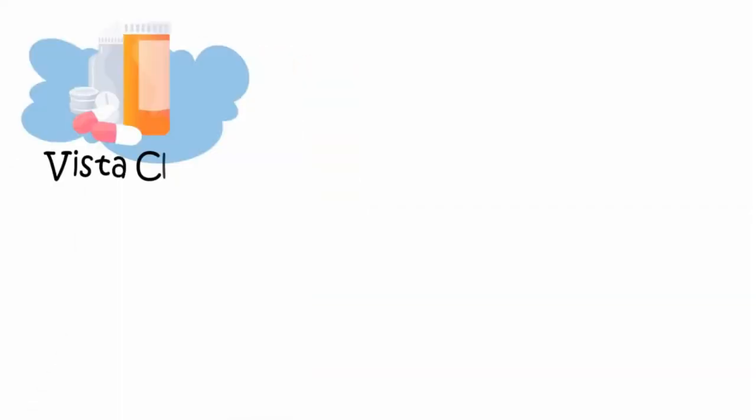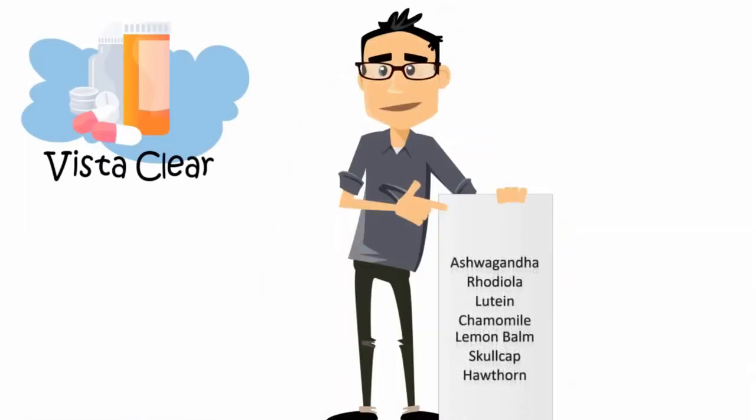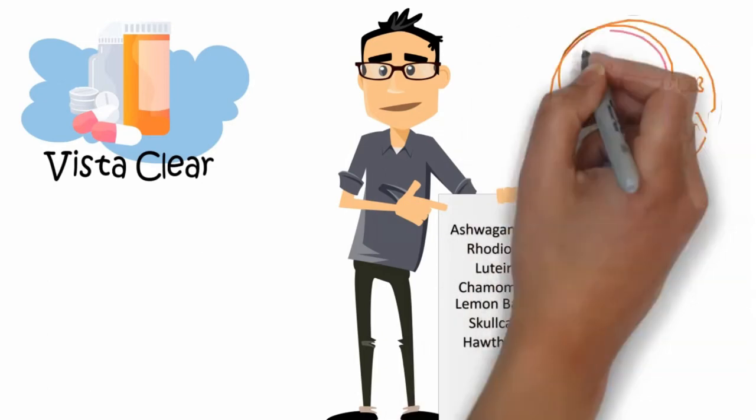VistaClear also contains ingredients by the likes of ashwagandha, rhodiola, lutein, chamomile, lemon balm, skullcap, hawthorn, St. John's wort that all work hand-in-hand to support normal eyesight.